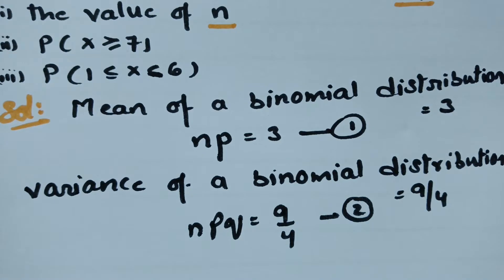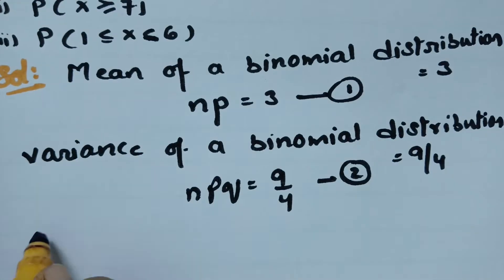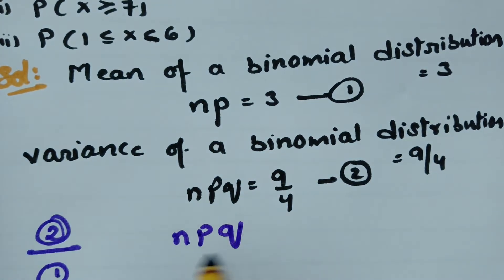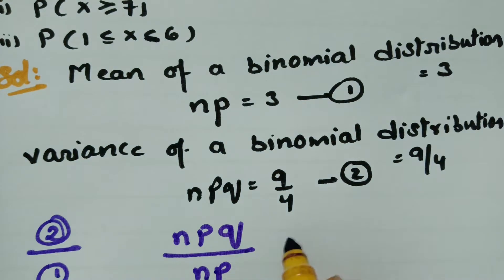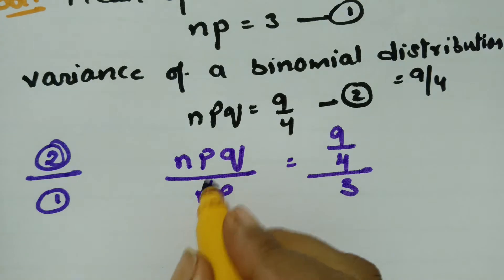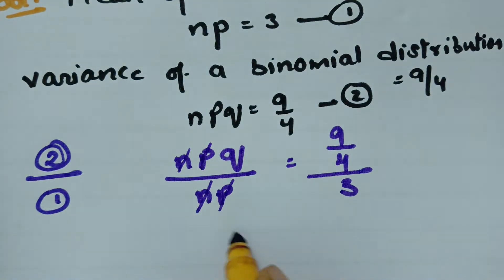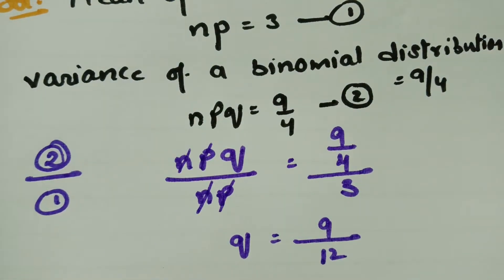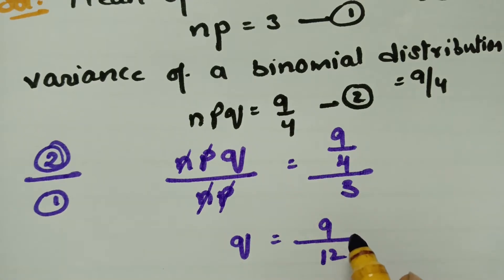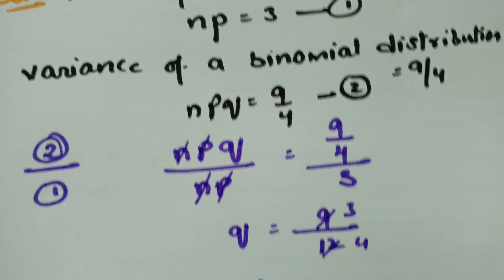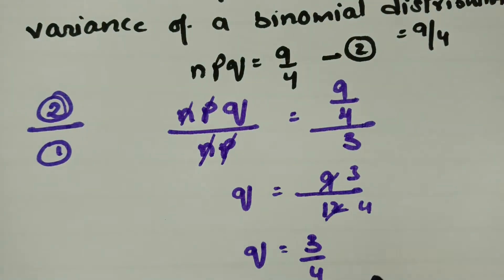Now I am going to divide the second equation by the first one. The second equation is npq and the first is np. So npq divided by np is 9 by 4 divided by 3. If I cancel np, then q is equal to 9 by 12. Simplifying, I got the value of q as 3 by 4.